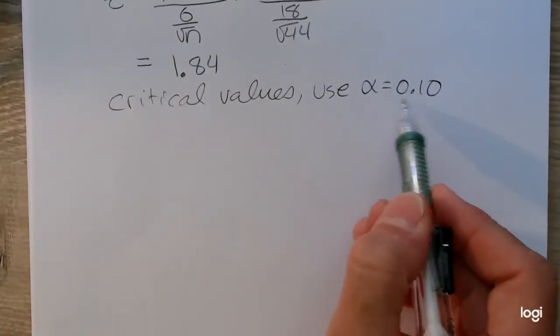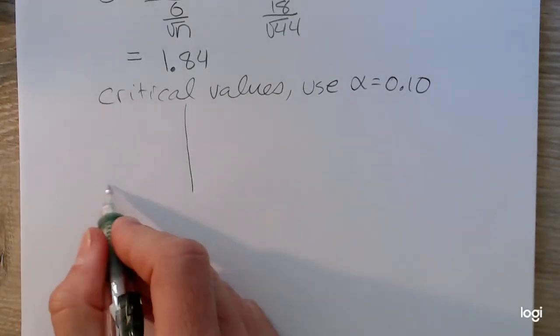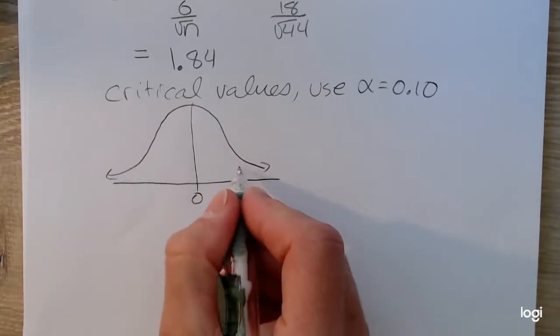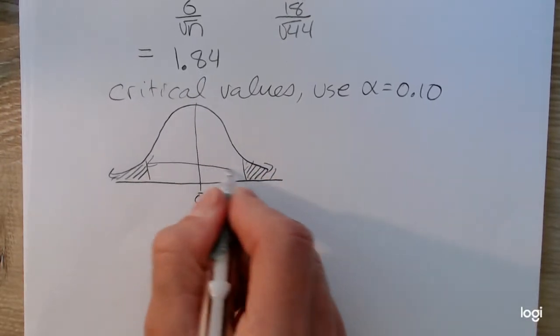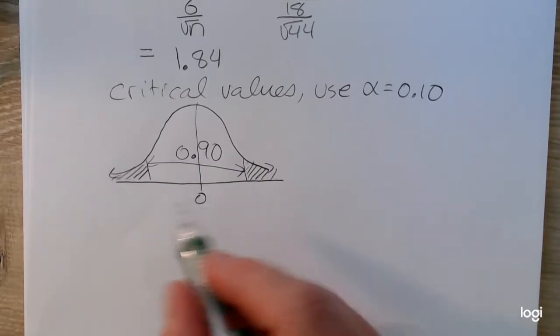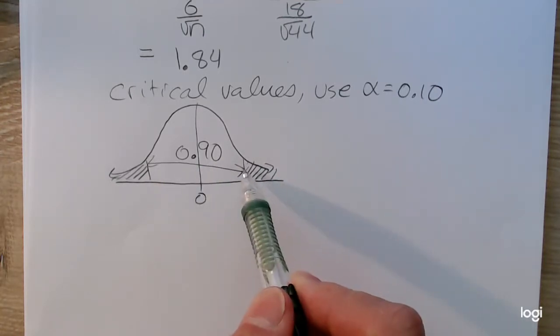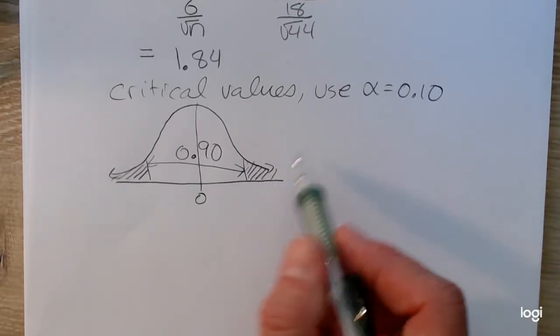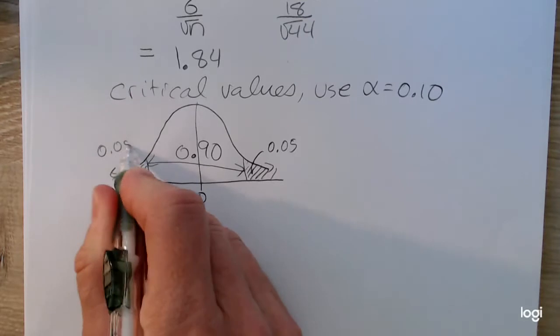How we find our critical values is the same way for a two-tailed test as how we found them using confidence intervals. I want to draw the standard normal distribution because I'm working with the z-distribution. I want to shade my two areas of rejection. I have 0.9 amount of area between my two critical values. Because alpha is 0.1, I'll have 0.9 between the two areas of rejection. When you have a two-tailed test, you need to divide the level of significance in half. So I'll have 0.05 amount of area in this upper tail and 0.05 area in this lower tail.